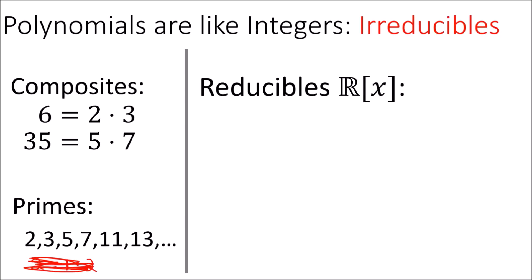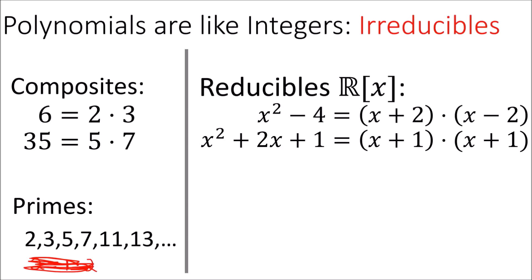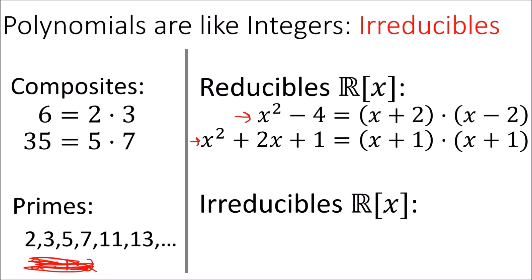With polynomials, we call polynomials that can be factored reducibles. Working in the set of polynomials in x with real coefficients, we can factor x squared minus 4 as a difference of squares into x plus 2 times x minus 2. We can also factor x squared plus 2x plus 1 into x plus 1 times x plus 1. So these polynomials are reducible. A couple of examples of irreducible polynomials with real coefficients are x squared plus 1 and x squared plus x plus 1 — these can't be factored with real coefficients, so they are irreducible.